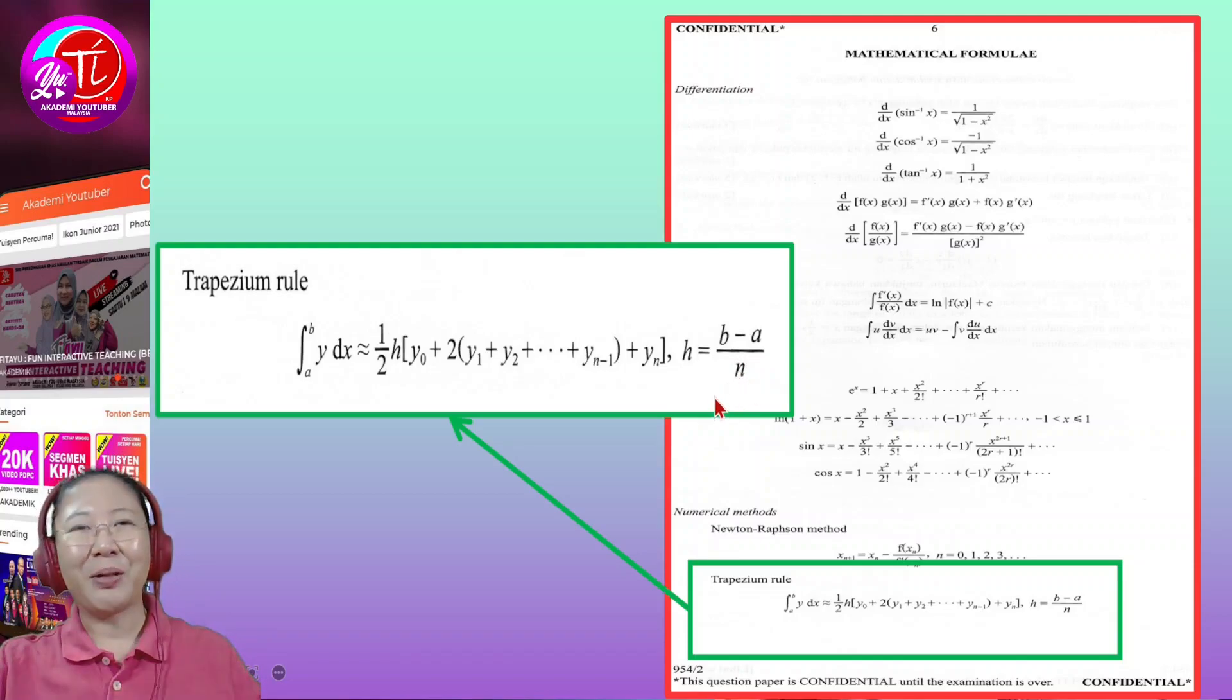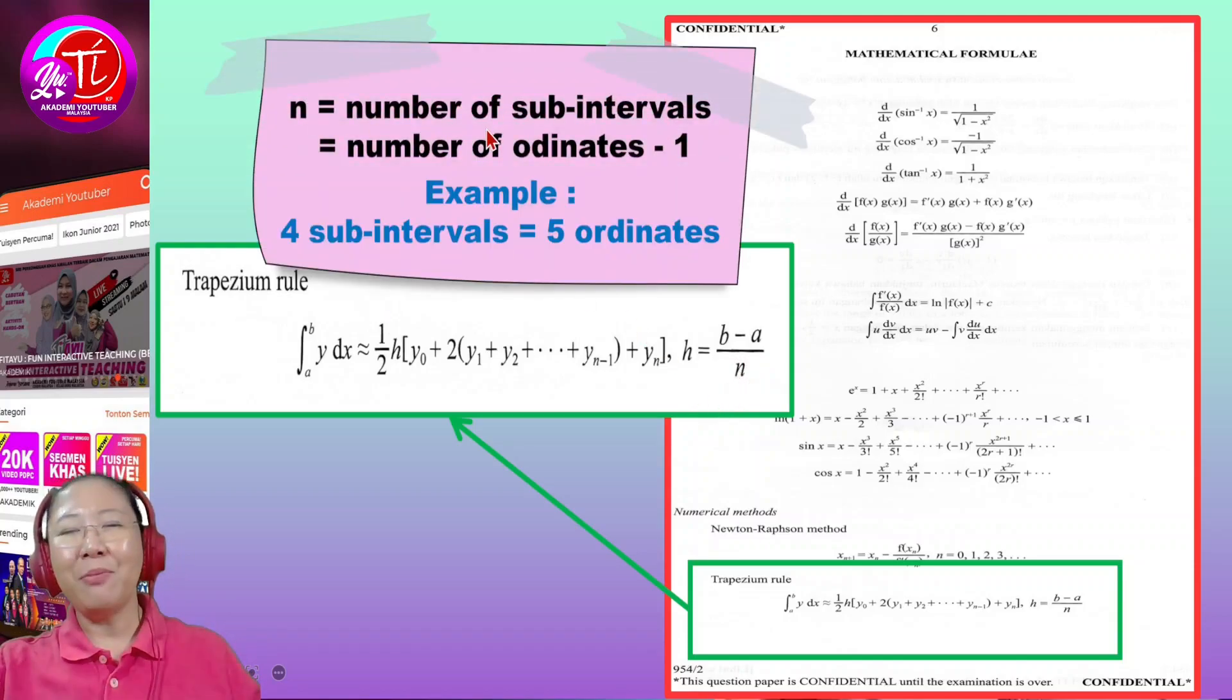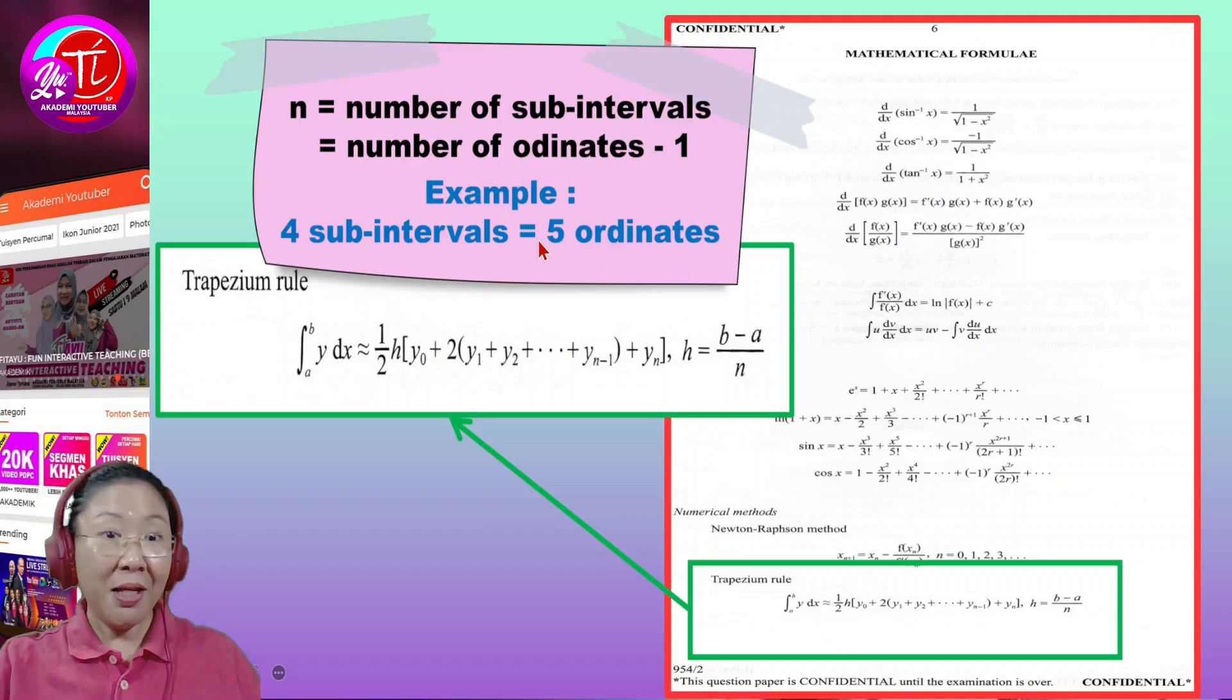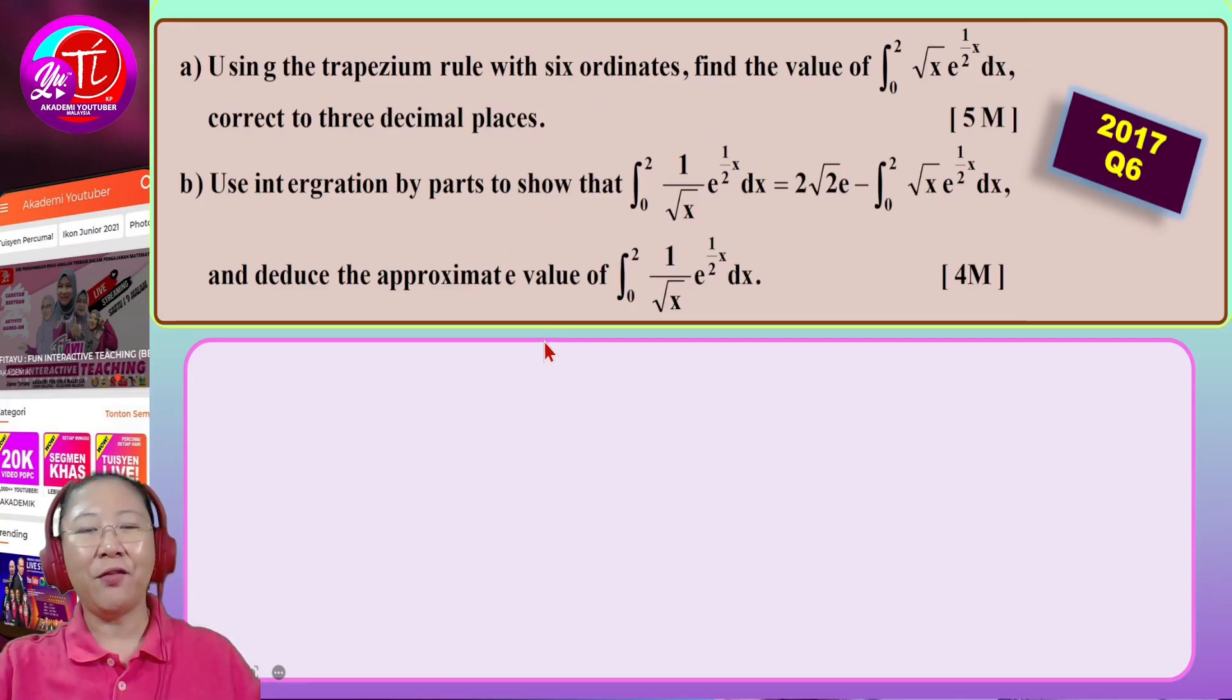So what exactly is this N? Let's check it out. N is the number of subintervals. You have a lot of subintervals inside the stripes, inside the table. Number of subintervals is actually the number of ordinates minus one. It's the number of intervals minus one. For example, four sub-intervals is equivalent to five ordinates. You have to make sure you read carefully inside the question. Basically they will tell you how many ordinates they need or how many stripes they need.